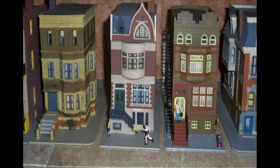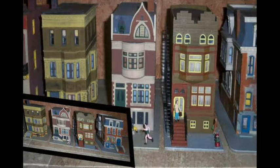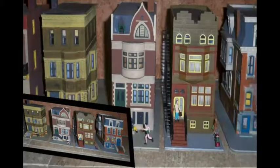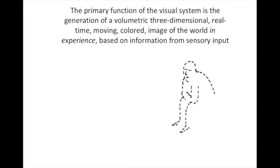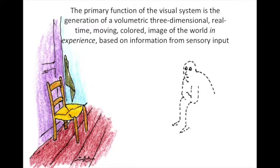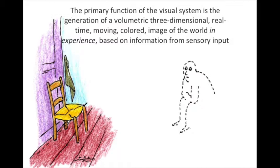If an artist were commissioned to take a two-dimensional image of a street scene and build it into a three-dimensional painted diorama model, what the artist would be commissioned to do is everyday visual function—where we take the two-dimensional retinal stimulus and expand it into a three-dimensional experience. The primary function of the visual system is the generation of a volumetric, three-dimensional, real-time, moving, colored image of the world in experience, based on the information from sensory input.